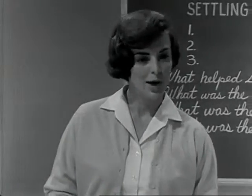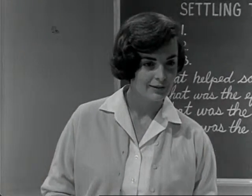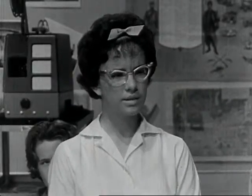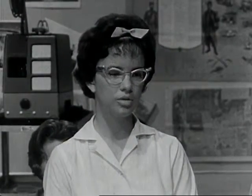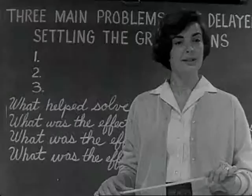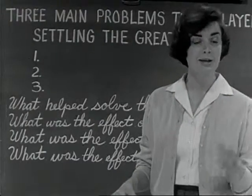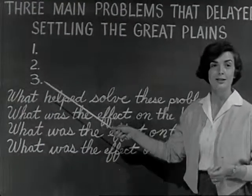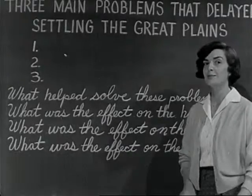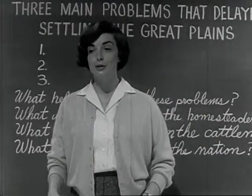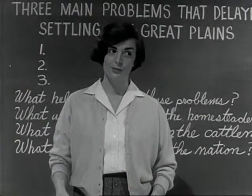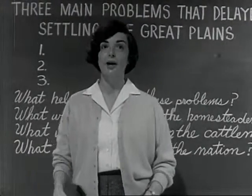Kathy, do you recall the problem about the Plains area that we discussed yesterday? Well, there was constant fighting between ranchers and farmers over the use of land, so neither of them could become really prosperous. And we decided that this situation kept many people away who might otherwise have come and helped to settle the Great Plains. Very good summary, Kathy. In this film, we're going to learn about some other problems that faced these people and what they finally did about them. Afterwards, I want you to be able to identify and discuss the problems and to describe how the eventual solution of these problems affected our country's history. All right, let's have the film.